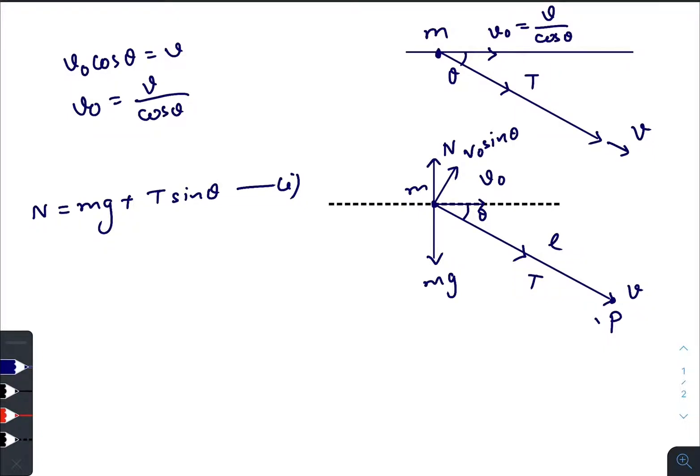And we know for circular motion the net force towards the center will be equal to M v perpendicular square divided by R. So net force towards the center is T plus Mg sine theta, this one is also theta.